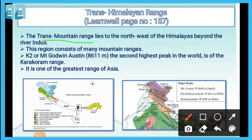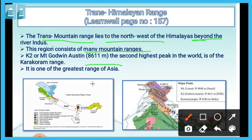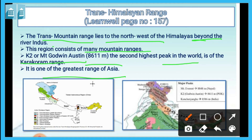The Trans-Himalayan range lies to the north west of the Himalayas, beyond the river Indus. This region consists of many mountain ranges. K2, or Mt. Godwin-Austen, at 8,611 meters, is the second highest peak in the world and is part of the Karakoram range. It is one of the greatest ranges of Asia.